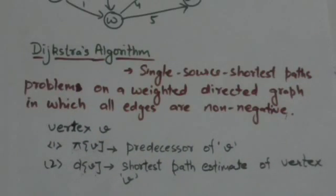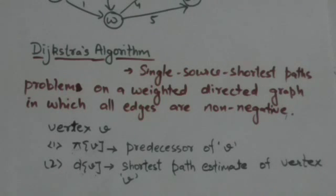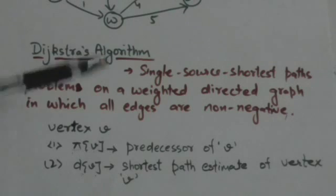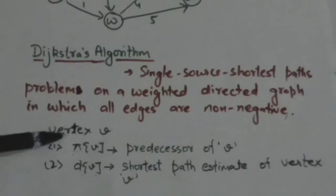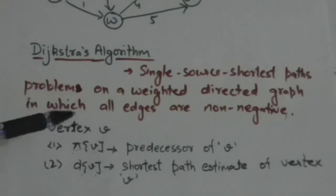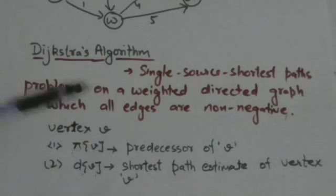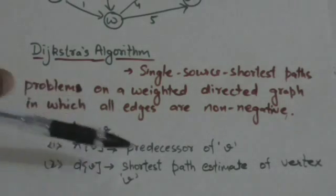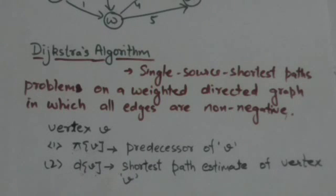Dijkstra's algorithm is used to solve the single source shortest path problem for weighted directed graphs in which all edge weights are non-negative. In this algorithm, we maintain two variables for each vertex v: the variable pi(v), which denotes the predecessor of vertex v, and the variable d(v), which denotes the shortest path estimate of vertex v from the source vertex.